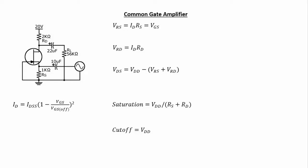Welcome back. This is going to be the last video on JFET amplifier configurations. In this video we'll cover the common gate, which is analogous to the common base in BJTs. If you remember anything about BJT common bases, you'll recall that they have pretty good voltage gain but no current gain, and we're going to see that the common gate amplifier has the same general characteristics.